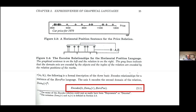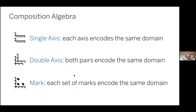The other thing I did in my dissertation was codify three algebraic operators that allowed for a really broad search space: single axis composition, double axis composition, and mark composition. This composition algebra gave the computer program the ability to search for effective encodings. There's more I could talk about here but I don't have time.